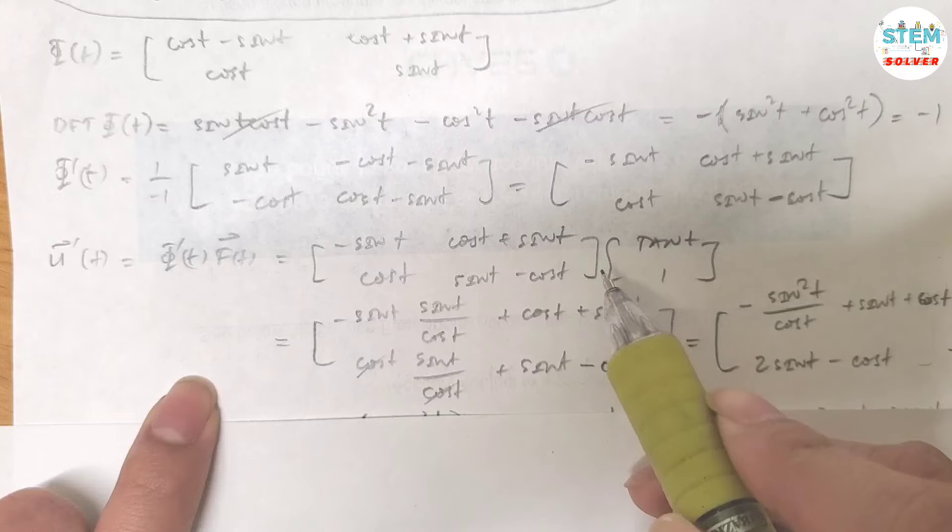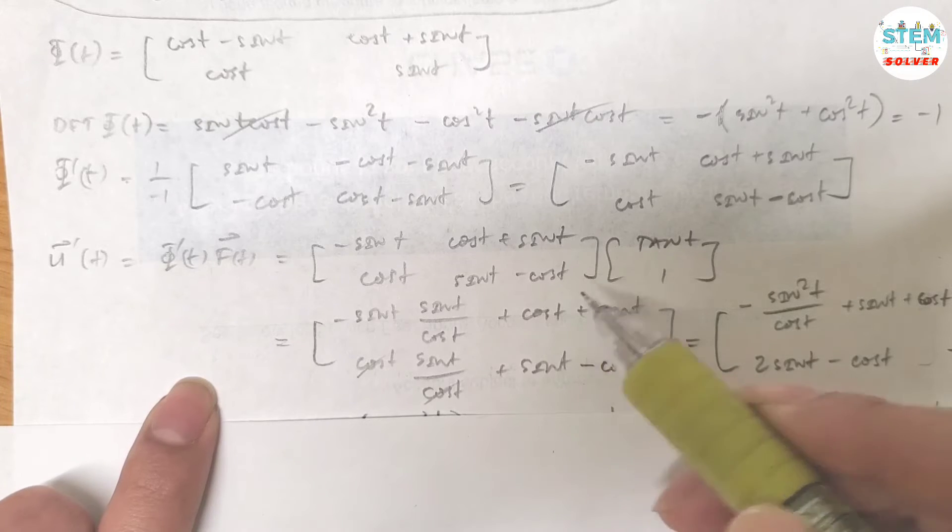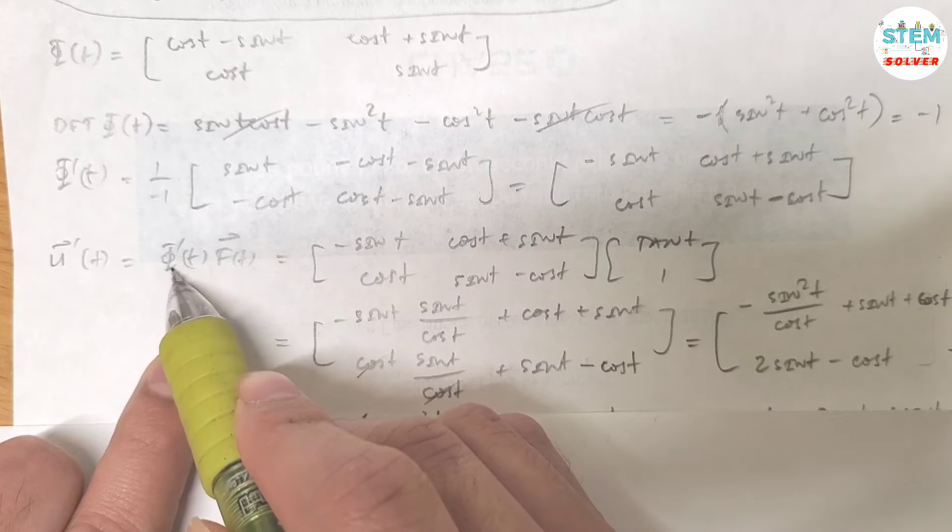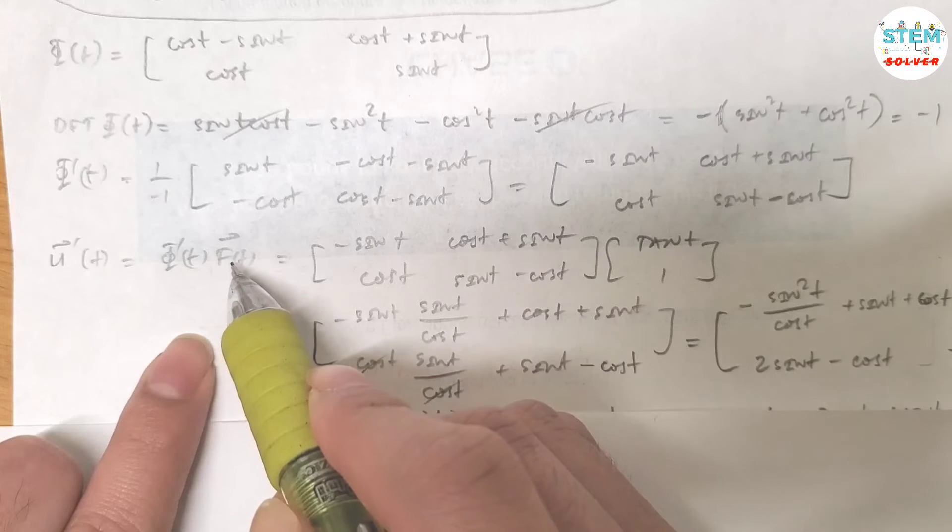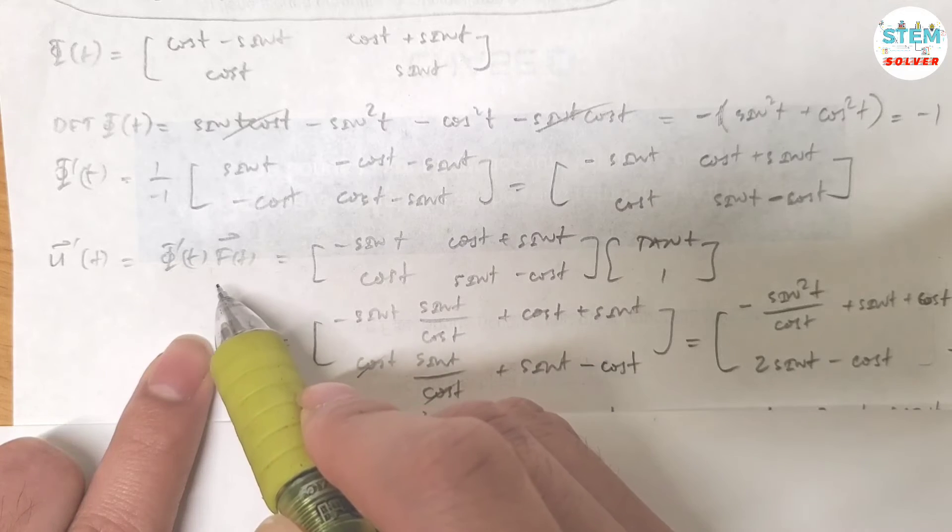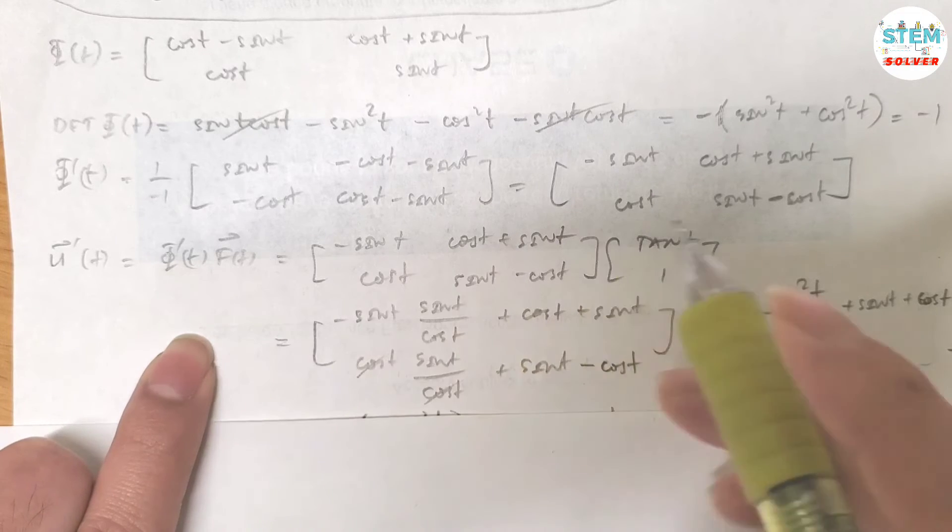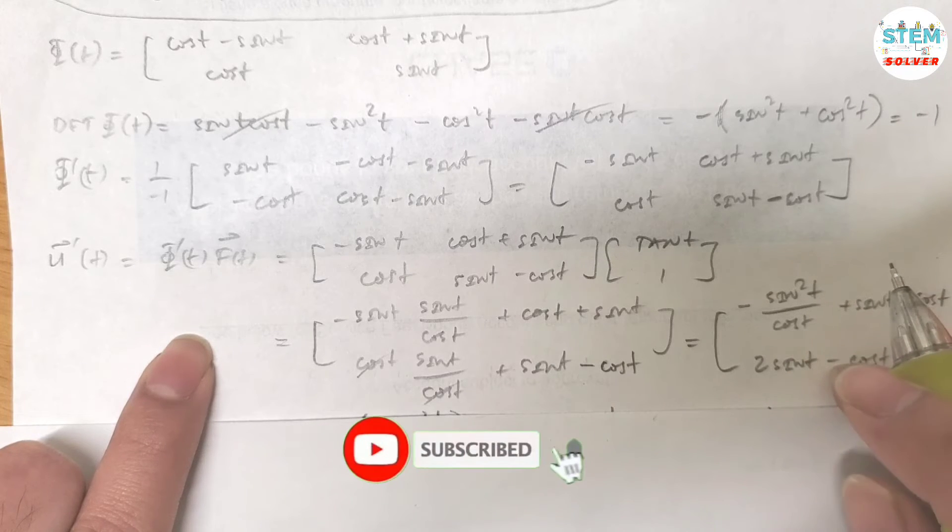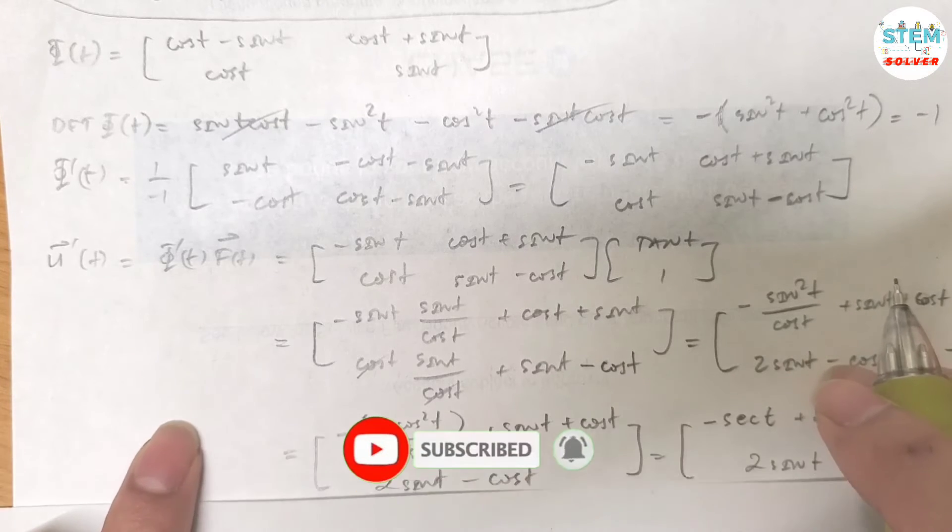So when you multiply matrices together, the order matters. So what do I mean by that? Φ inverse, Φ(t) times f(t), is not the same as f(t) times inverse Φ(t), okay? So A times B is not the same as B times A for matrices. That's what I mean by changing, switching order.